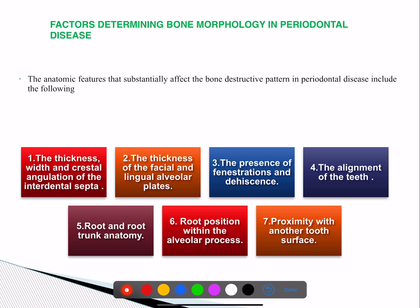Various factors determine bone morphology: the thickness, width, and crestal angulation of interdental septa; the thickness of facial and lingual alveolar plates; fenestrations and dehiscences; alignment of teeth; root and root trunk anatomy; root position; and proximity to another tooth surface. Remember these seven factors as they may be asked in exams.